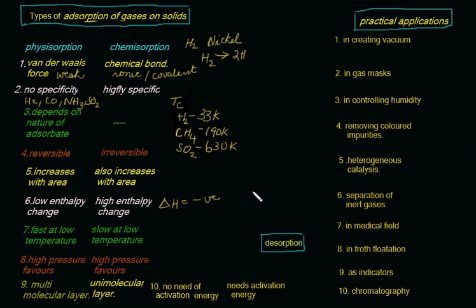Now we will see one topic: desorption. What is desorption? The adsorbate which has adsorbed onto the surface of the adsorbent can be removed by a suitable process. That process or procedure is called desorption — removal of the adsorbate from the surface of the adsorbent.